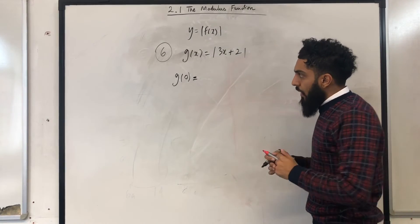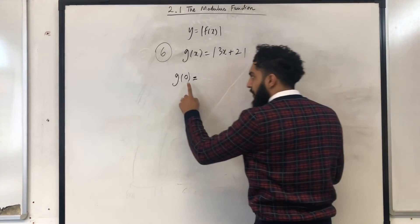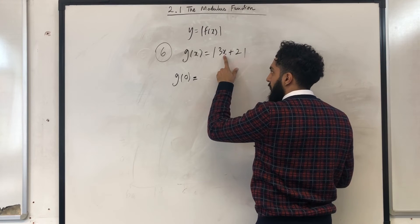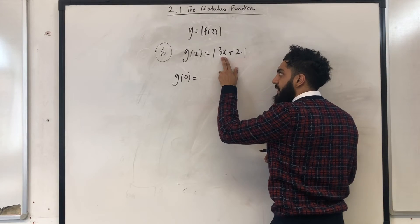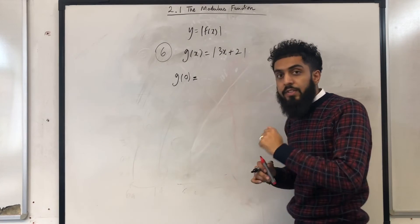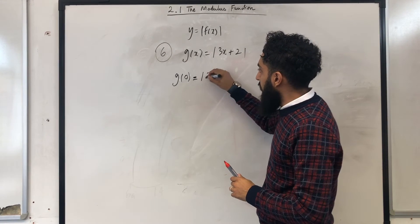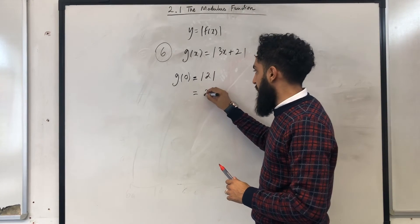What we need to do is substitute x equal to 0 into the function. So 3 times 0 is 0, plus 2 is 2. So g of 0 is the modulus of 2, which we know is just 2.